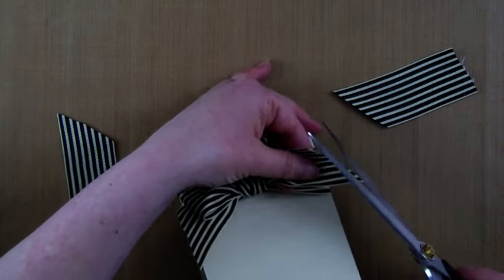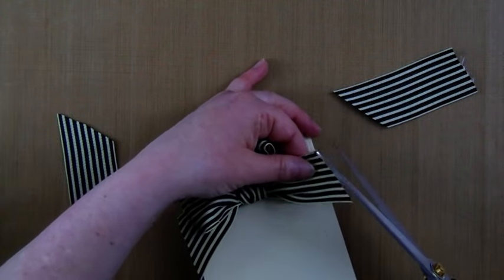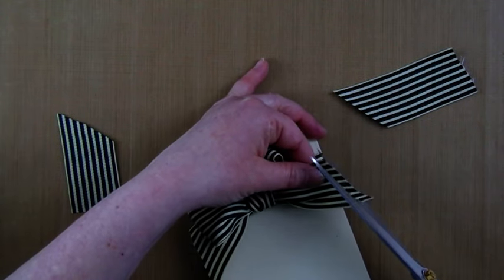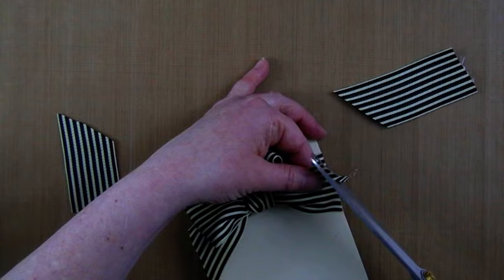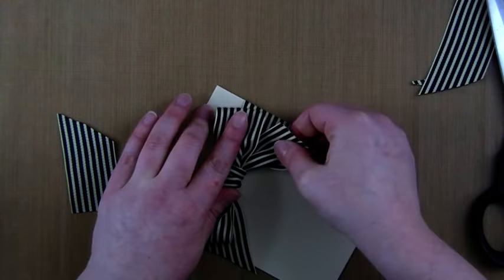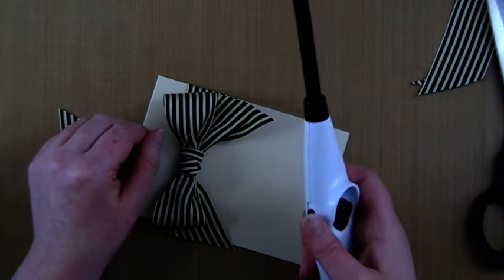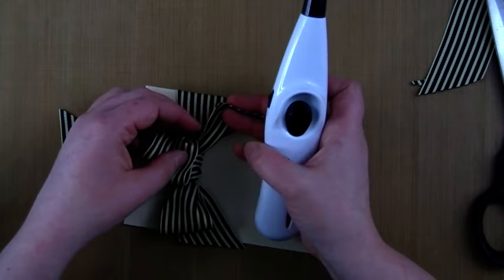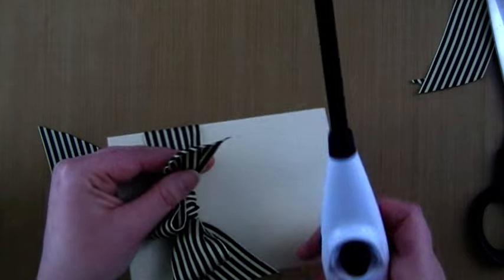Now a pet hate of mine is fraying ribbon, and that's just a personal choice. It's just something that frustrates me when I've finished a card. So what I do is put the ribbon through a flame very lightly.